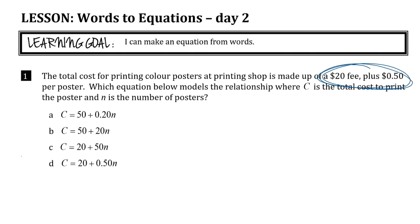What we really focused on yesterday when we were looking at words is how to identify - this question has two numbers, and one of those is going to be the start and one of them is going to be the change. We have to figure out which one is which. Once we do that, we can answer the question. In this case, I'm just going to pick which one of these is the proper equation. Let's read this and see if we can figure it out. The total cost for printing color posters at a printing shop is made up of a $20 fee plus $0.50 per poster.